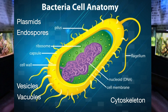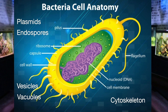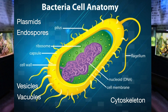Bacteria have a cell membrane, as all cells do. The cell membrane is the barrier that separates the inside of the cell from the outside. Cell membranes are amphipathic — they have a charged head and hydrophobic tails — which does a great job keeping things in that need to be in there and keeping things out that aren't supposed to be there. This makes the membrane selectively permeable.